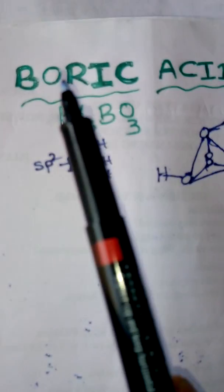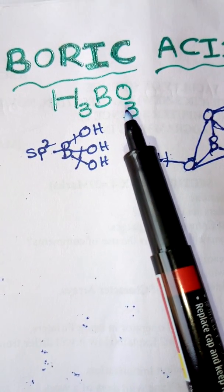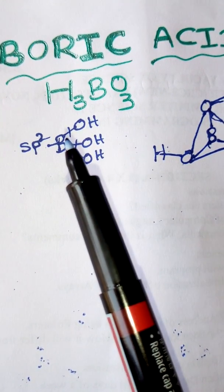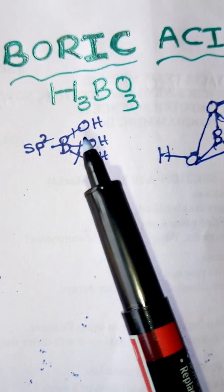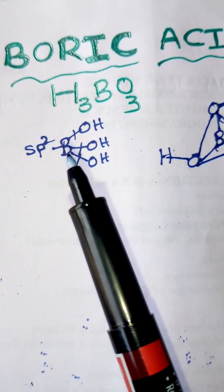In this video we are going to learn the structure of boric acid. The formula of boric acid is H3BO3, and the hybridization of boron in boric acid is sp2.